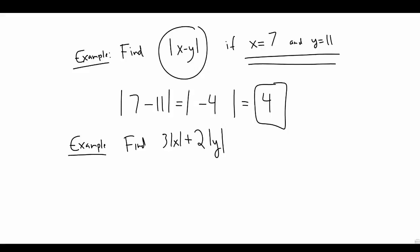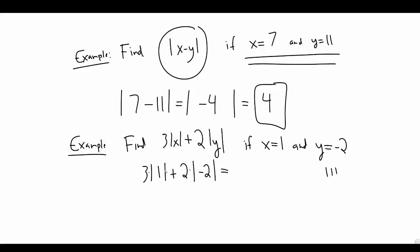Let's do another one — evaluate this expression when x is one and y is negative two. Substituting positive one for x, the absolute value of one is one. The absolute value of negative two is positive two. This gives us three times one plus two times two, which is three plus four, equaling seven.